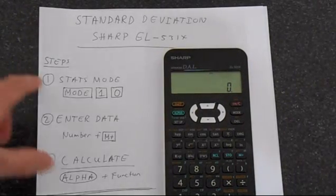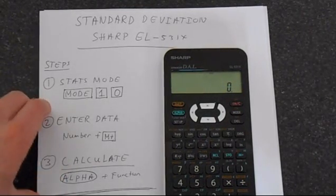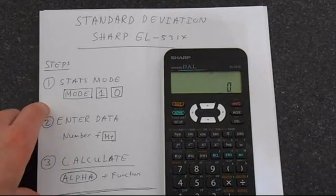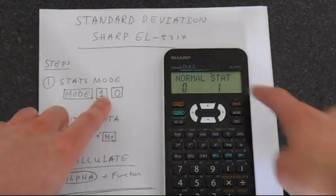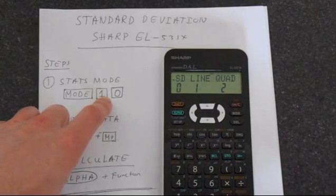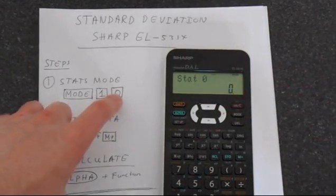There are three steps that we need to follow to calculate the standard deviation. The first step is to put the calculator into the correct mode. To do this we just press MODE and put it into stat mode which is number 1, and then we want option 0 which is the correct mode.